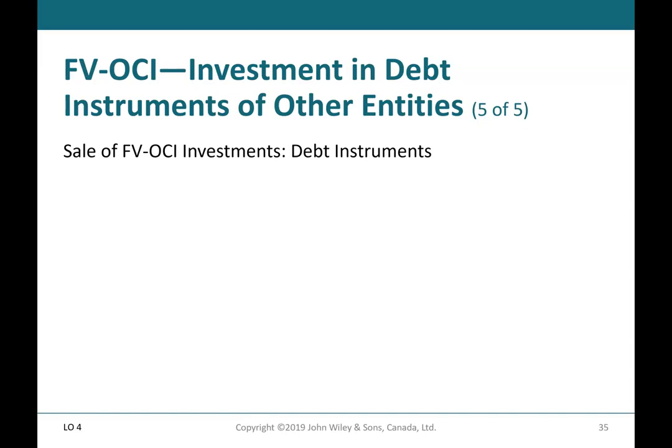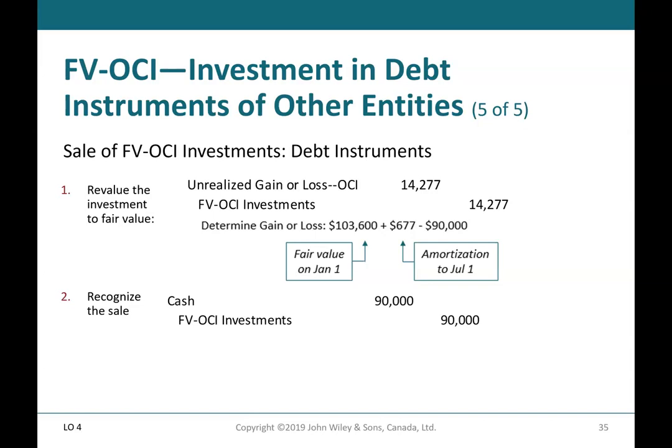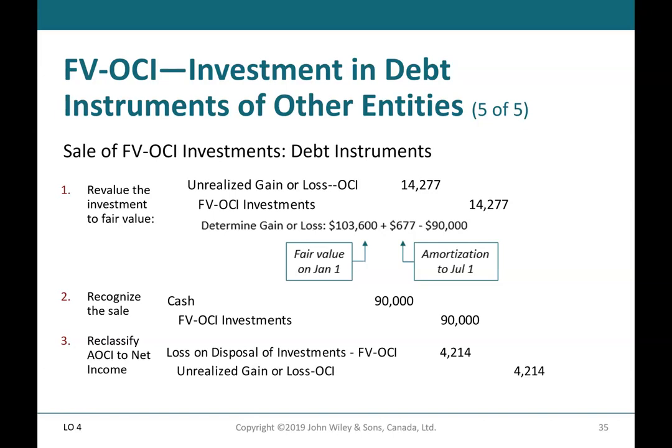FV-OCI — investment in debt instruments, Part 5 of 5. To revalue the investment to fair value: debit unrealized gain or loss OCI $14,277; credit fair value through OCI investments $14,277. To recognize the sale: debit cash $90,000; credit fair value through OCI investments $90,000. To reclassify accumulated other comprehensive income to net income: debit loss on disposal of investments — fair value through OCI — $4,214; credit unrealized gain or loss through OCI $4,214.